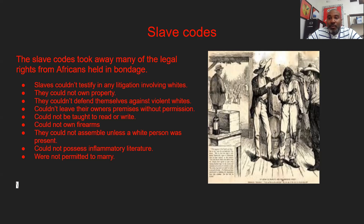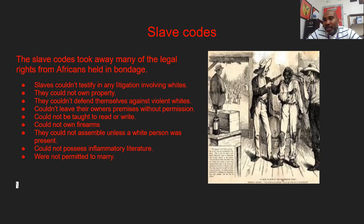Slaves could not be taught to read or write — it was made illegal. Slaves couldn't own firearms. Slaves could not assemble unless a white person was present, meaning they couldn't have gatherings, parties, or secret organizations without a white person present. Slaves could not possess inflammatory literature — books or magazines that defamed the institution of slavery or were too political. And slaves were not permitted to marry unless they received their slave master's permission.